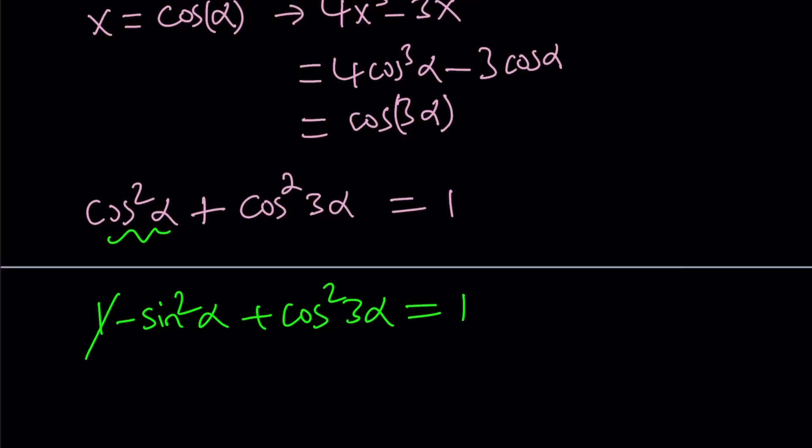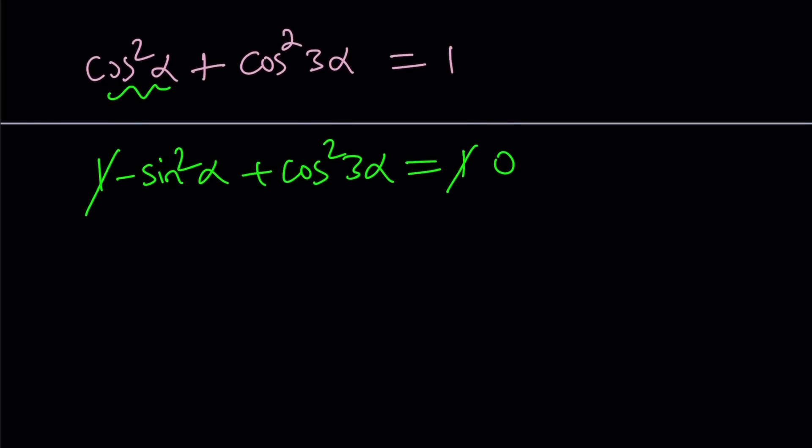And then you're going to get a 0 here. And if you put negative sine squared on the right-hand side, you're going to get cosine squared 3 alpha equals sine squared alpha. It's better to have them on different sides so we can solve it as a normal, standard trigonometric equation.